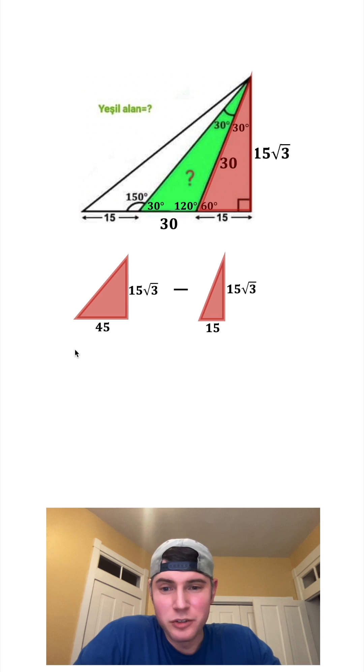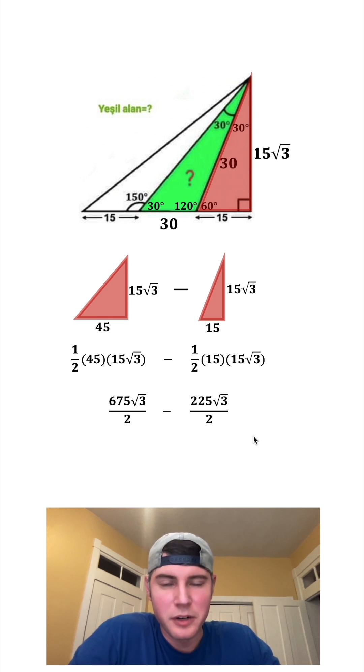And now let's calculate the areas. Area of a triangle is one half times the base times the height. And this simplifies into 675 root 3 over 2, and this simplifies into 225 root 3 over 2. And after we subtract these, we get 450 root 3 over 2, which is approximately 389.71 units squared. This is the area of the green triangle. How exciting.